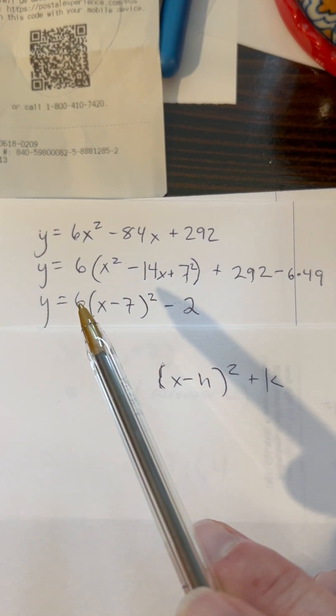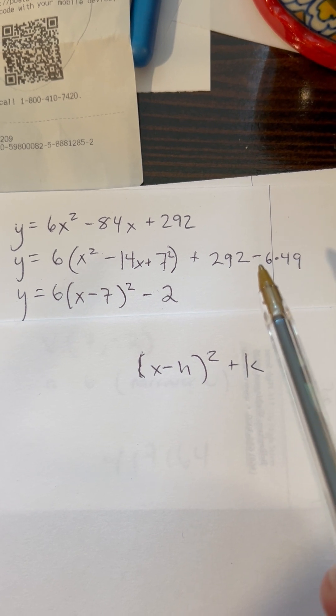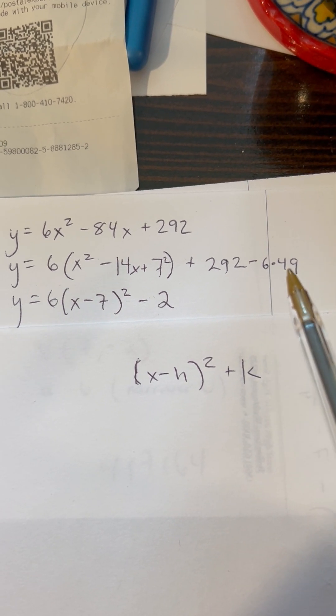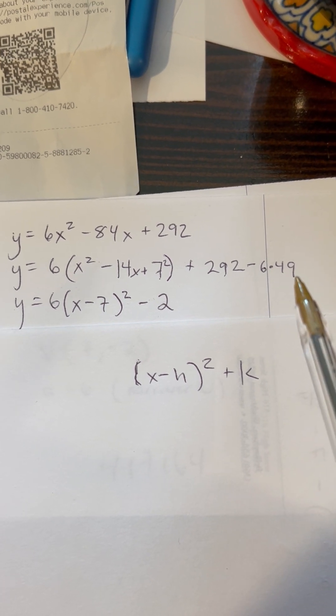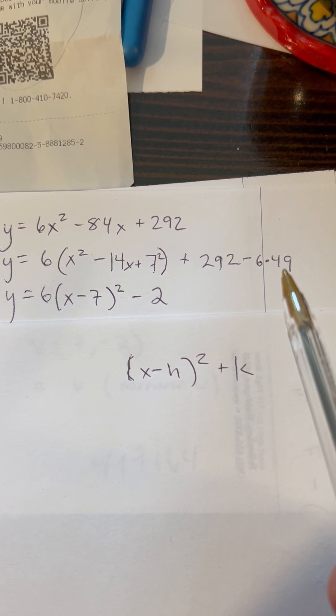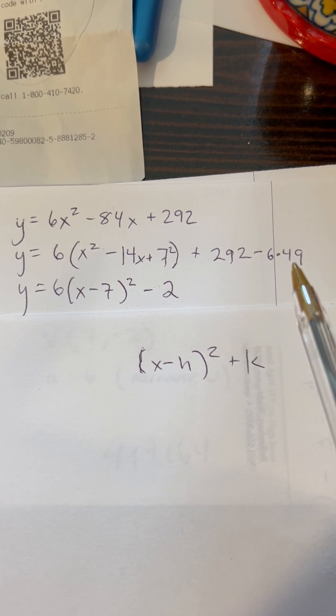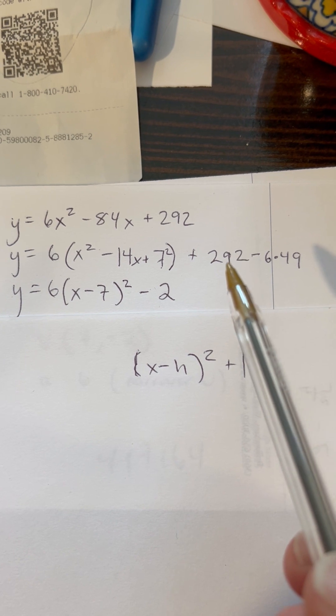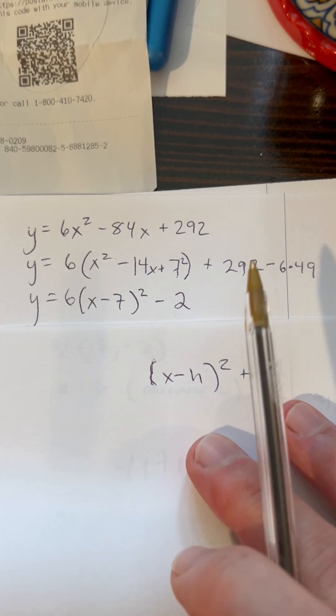I've got my 6 out here that I factored out to start with. And then plus 292 minus 6 times 49. Well, 6 times 50 would be 300, right? 6 times 5 is 30. 6 times 50 is 300. But I have 6 times 49. So it's 300 minus 6, which is 294. So I've got 2 plus 292 minus 294 leaves me with a minus 2.